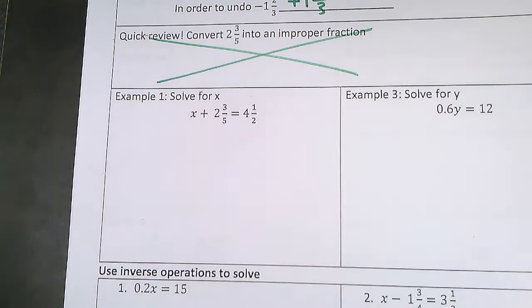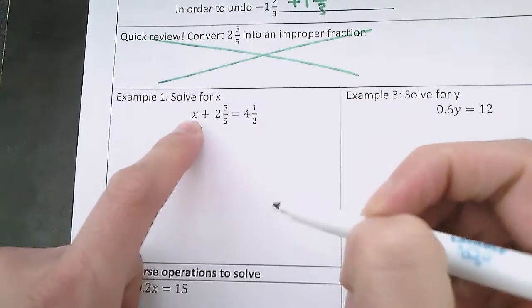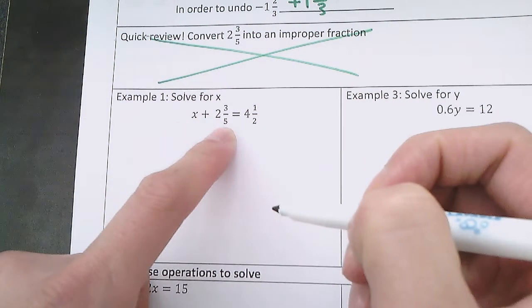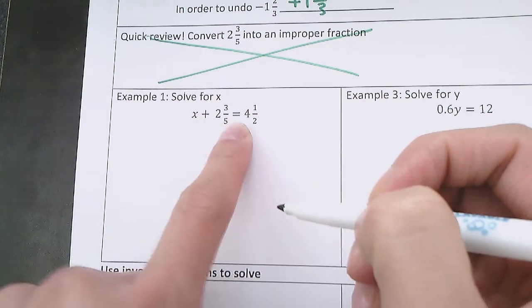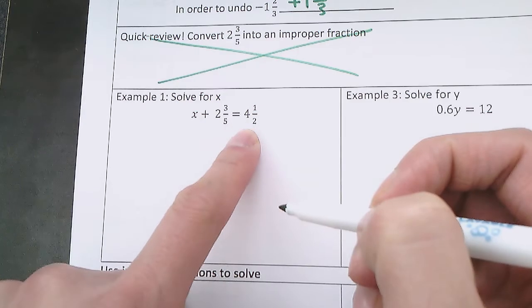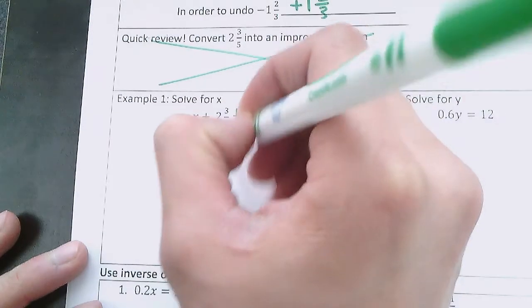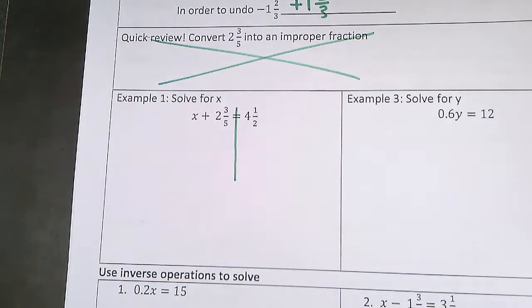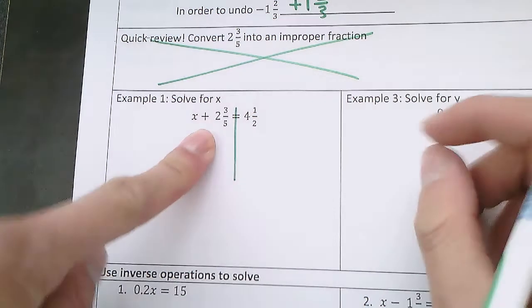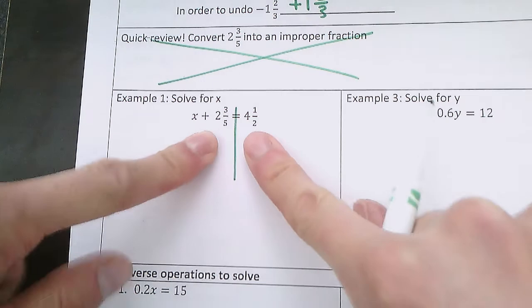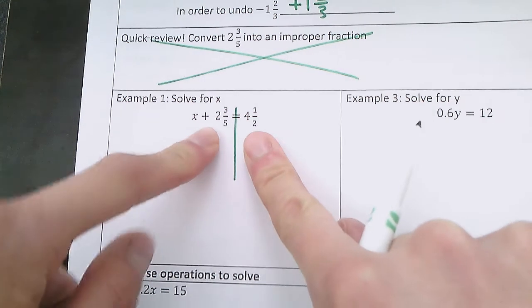So here it's x and then we're adding 2 and 3 fifths to that x, and this equals 4 and 1 half. So let's start by drawing our line down the equal sign so that we can remember that everything that happens on the left side still has to happen on the right side so that we can stay balanced.